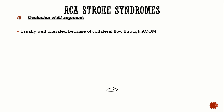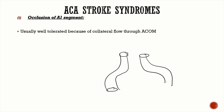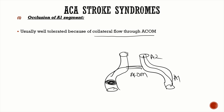Now, the different ACA stroke syndromes. If you have an A1 segment occlusion, there are not going to be any major clinical features. This is well tolerated because there is good collateral flow through the anterior communicating artery — even if you have an occlusion here, blood reaches other parts through the ACOM.